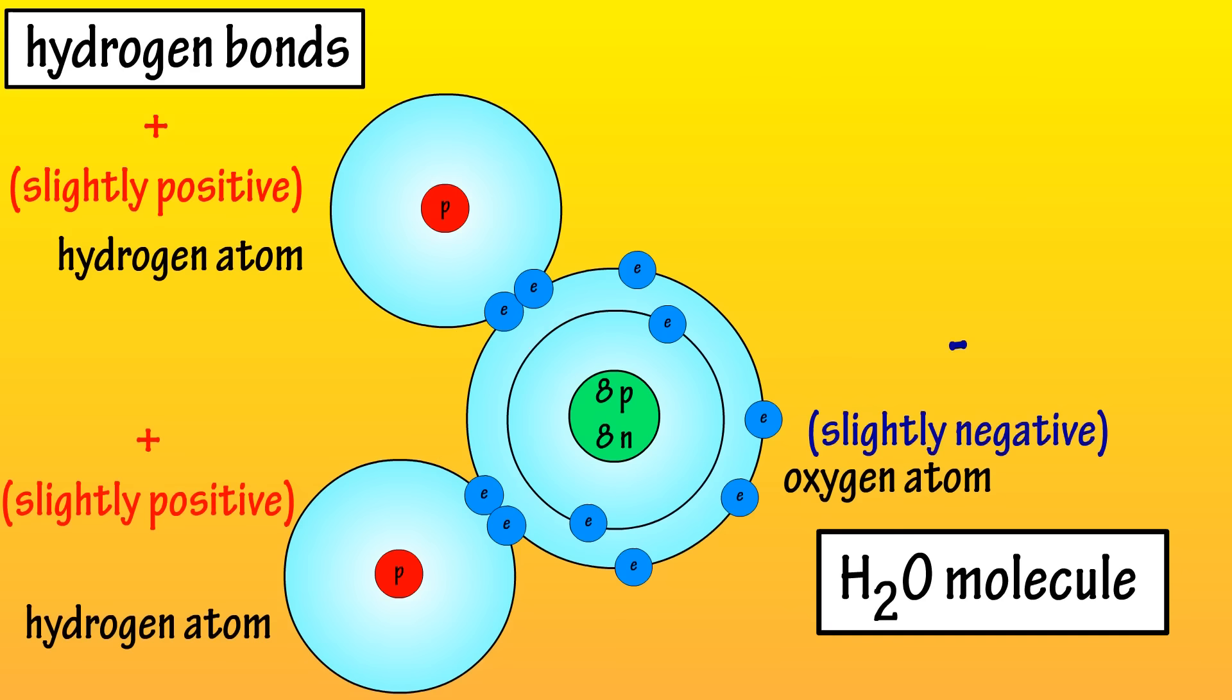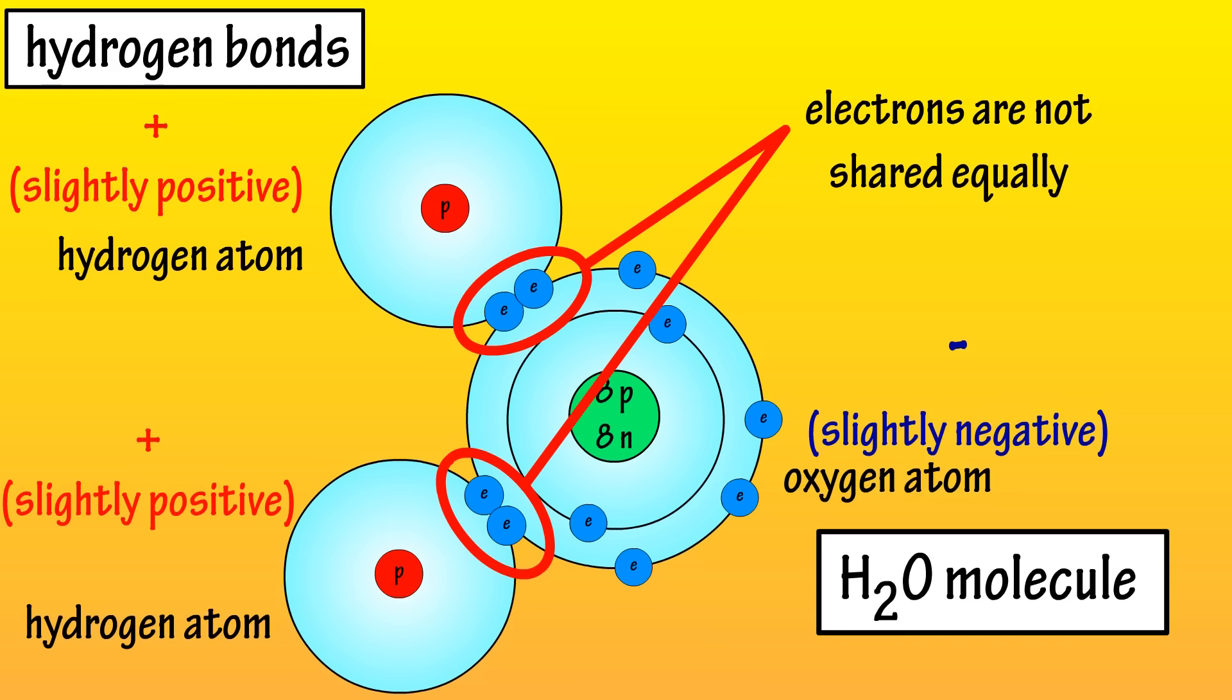The electrons are not shared equally within the molecule, as they have a higher probability of being found closer to the nucleus of the oxygen atom, giving that end a slightly negative charge. So the hydrogen atom's end of the molecule will have a slightly positive charge.